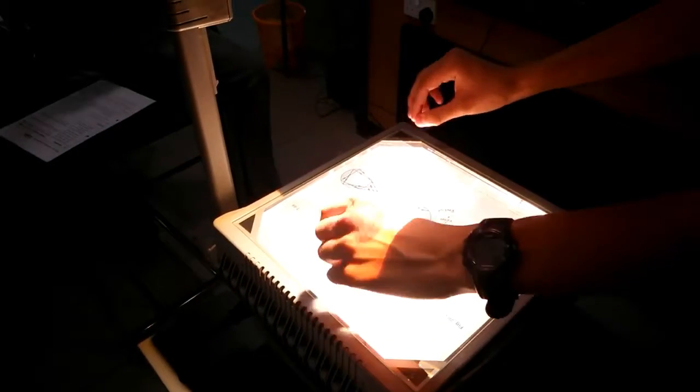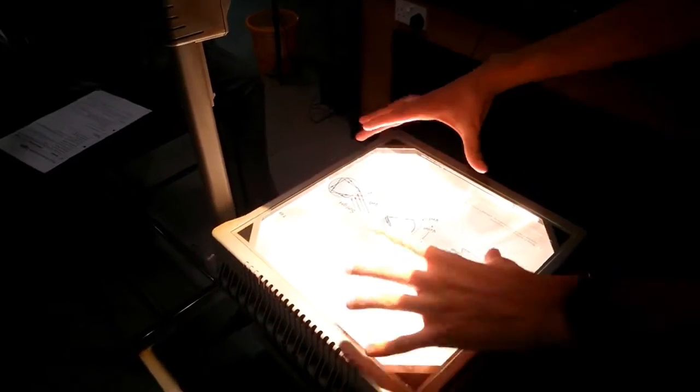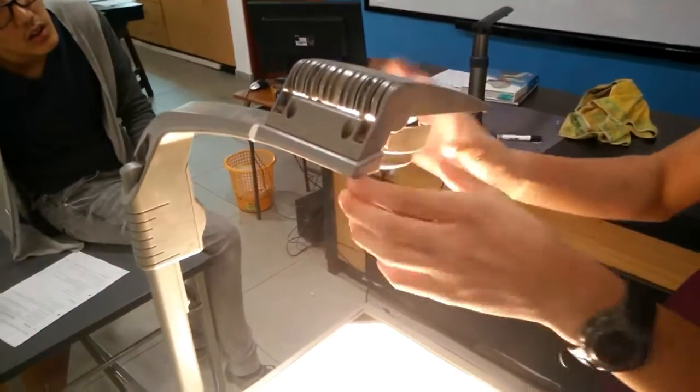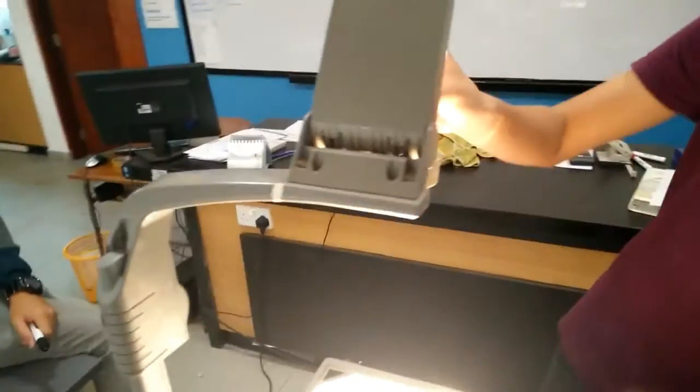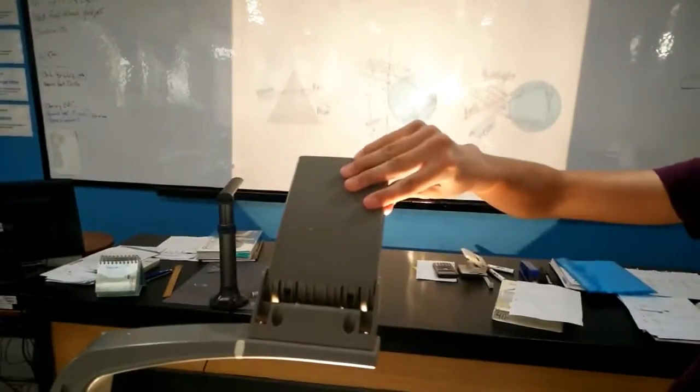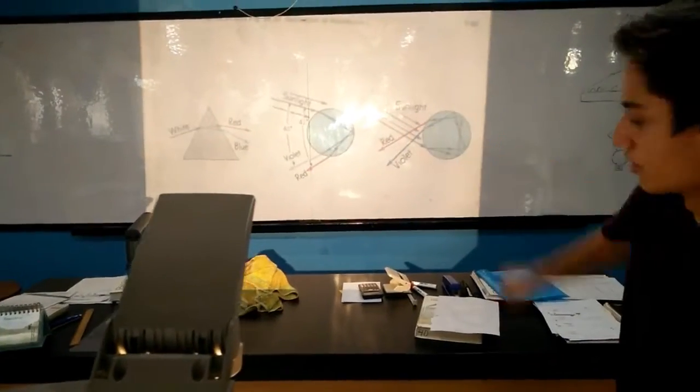And then from all the little prisms on the inside, it takes all this image and it focuses it to this spot. Then from here, it's focused and reflected onto the board.